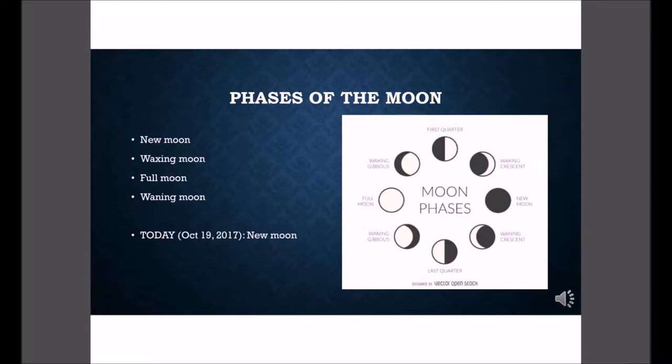Phases of the moon - very briefly, a quick introduction. Today is the day of the new moon, October 19th, 2017. From the new moon it's going to go through this waxing phase where it's going to get lighter and lighter and reach the full moon 15 days later. Then from the full moon it's going to go through the waning stage and go back again to the new moon. Very straightforward, very cyclical.